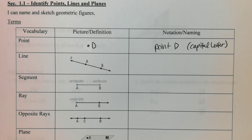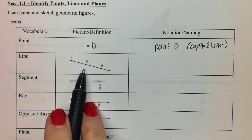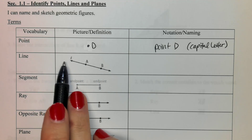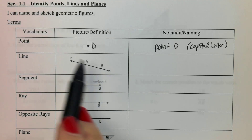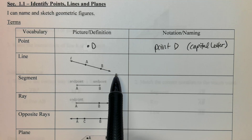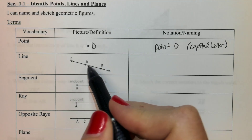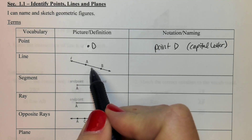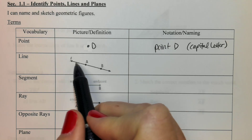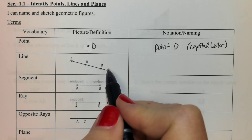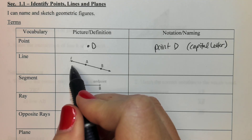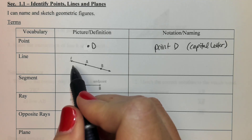Next up, we've got a line. If I asked anybody to draw one, you guys would totally draw it like this. It has one dimension since it goes in both directions forever, but it has one dimension because it just has a length and doesn't have width. It's represented by drawing a line — it's got to have arrows on both ends. That's what makes it a line. It has to continue in both directions forever.